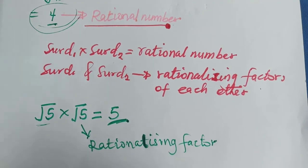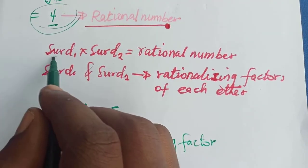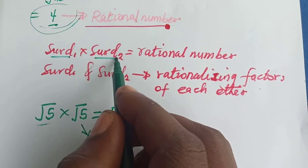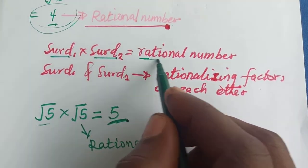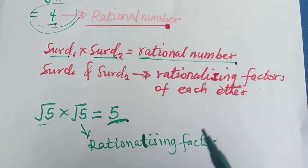So rationalization of a surd is simply multiplying a surd by another surd to get a rational number.